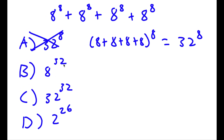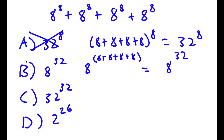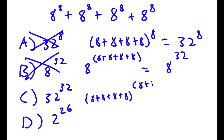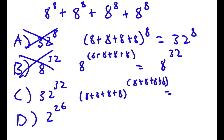For answer choice B, 8 to the power of 32, you get this by keeping the base the same and adding all the exponents: 8 to the power of 8 + 8 + 8 + 8 equals 8 to the power of 32. This method is wrong as well — that's not how you add these terms; you can't simply add all the exponents together. For answer choice C, 32 to the power of 32, you add all the bases together and all the exponents together, but this is also wrong.